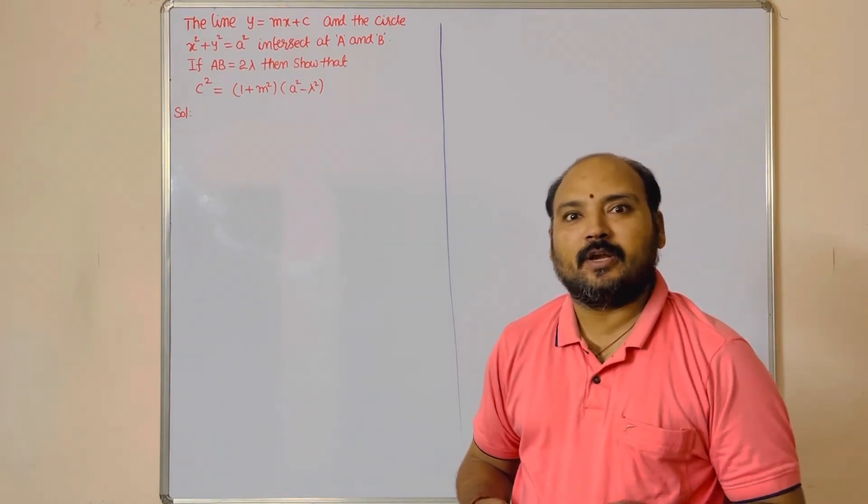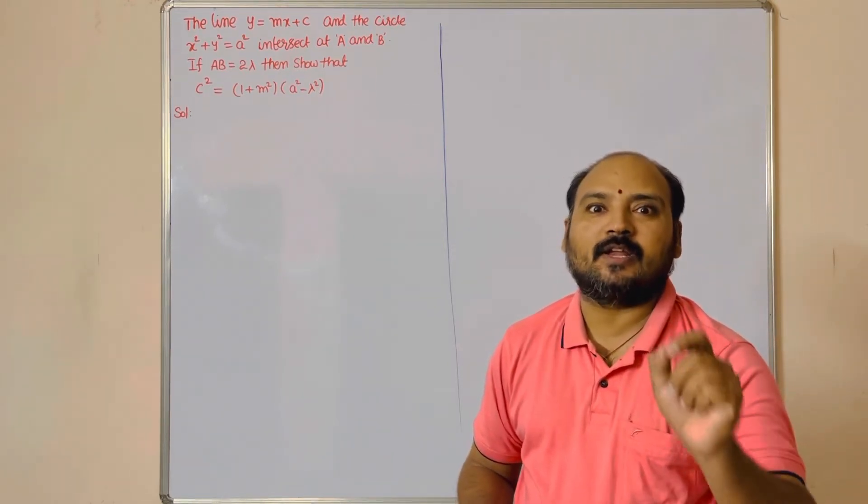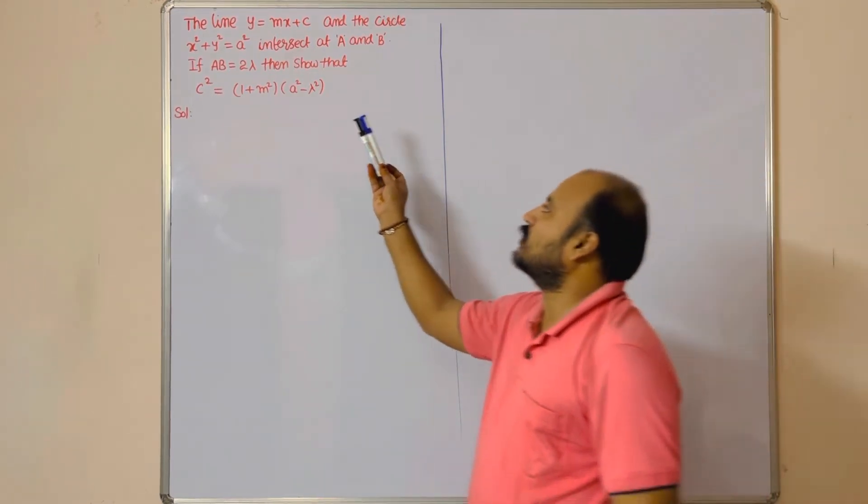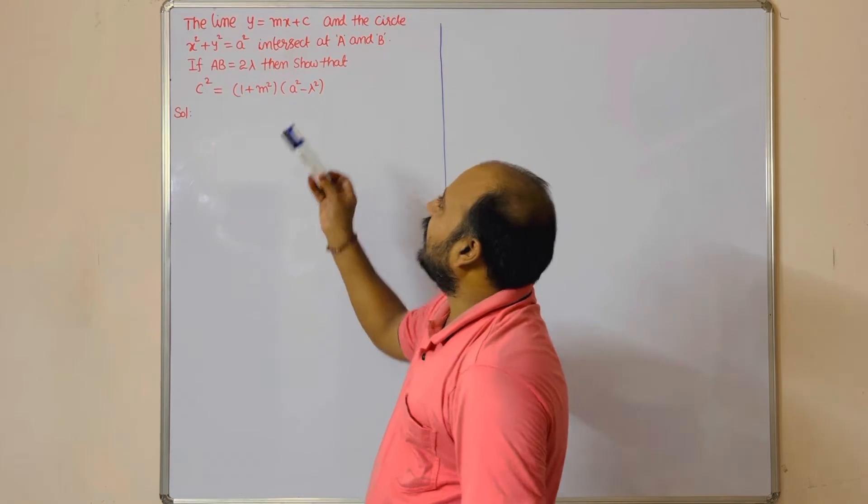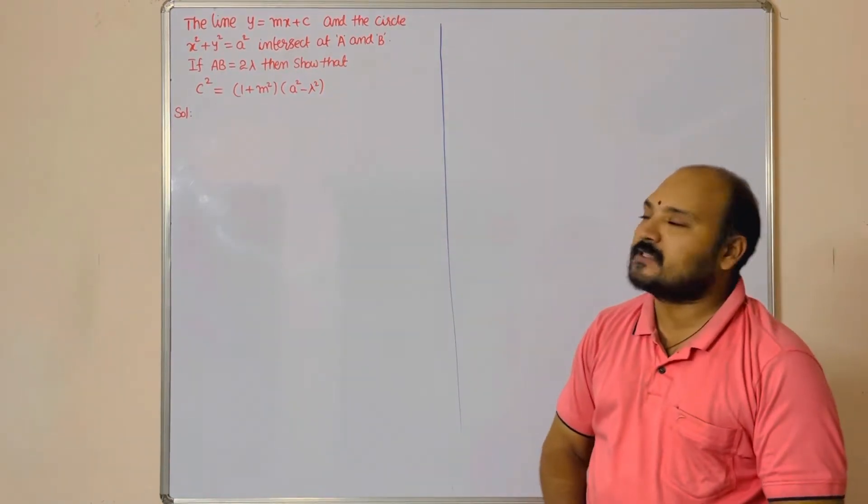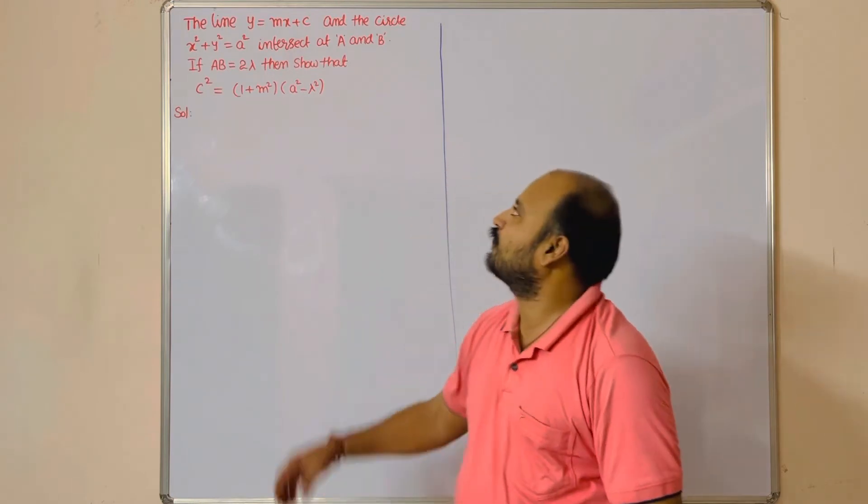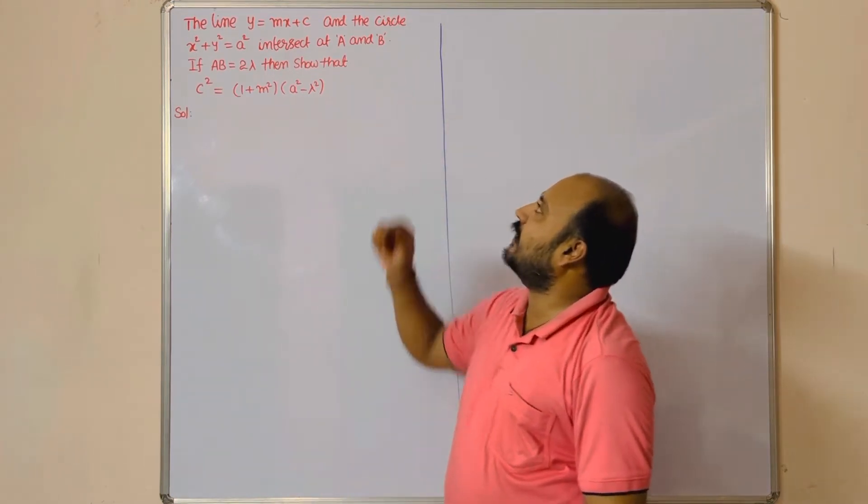Let us have a discussion. The question: the line y = mx + c and the circle x² + y² = a² intersect at A and B.